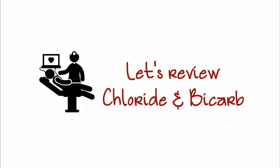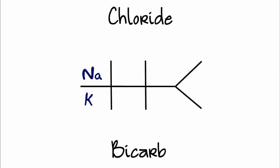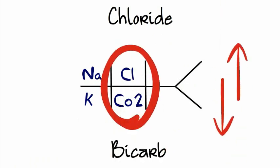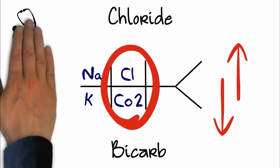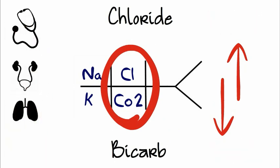So let's review bicarb and chloride. The acid-base part of the compensation of this diagram, we always look at them together. And either high or low, we look somewhere else. We assess our patients, looking at their history. Are they renal patients, respiratory patients? Are they dehydrated? Or did we give them medications, like Lasix or IV fluids that upset their acid-base balance?